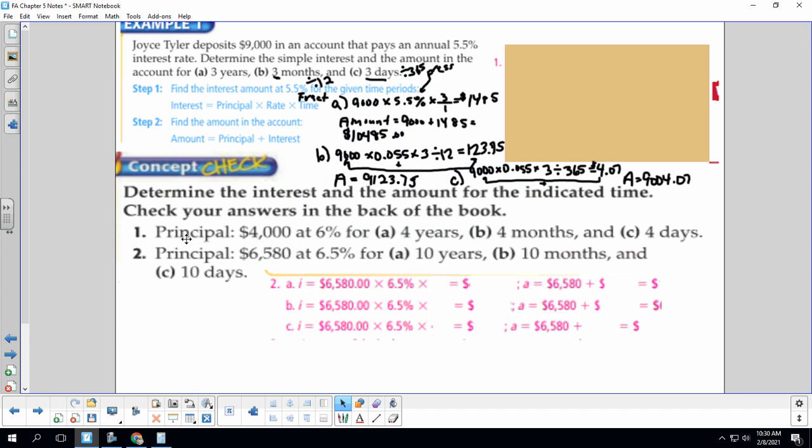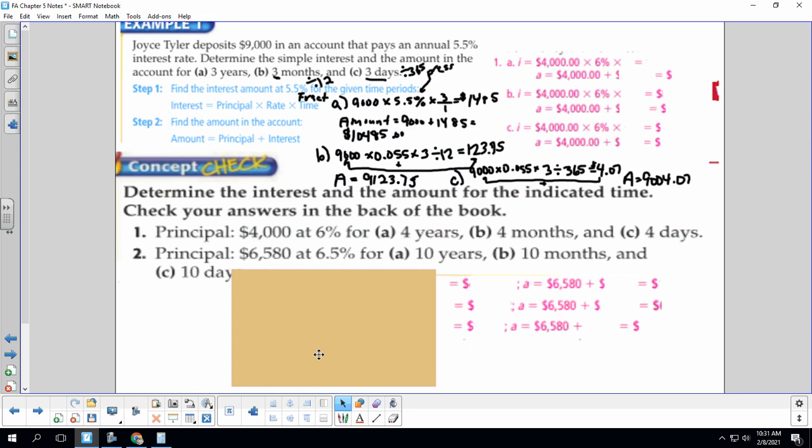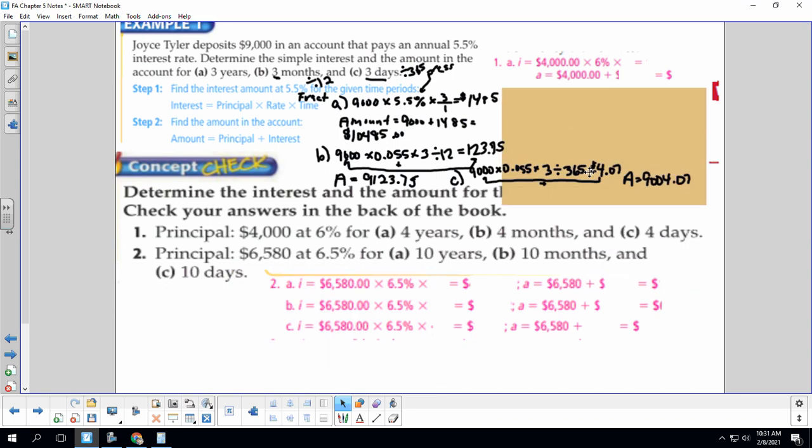Let's see how this works for our concept check here. For number one, our principal is $4,000. We get 6% annually. We're going to calculate that for four years, four months, and four days. So remember, this one is divide by one, divide by 12, and divide by 365.